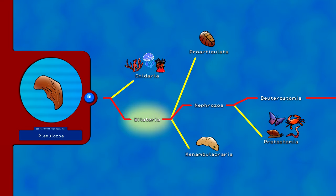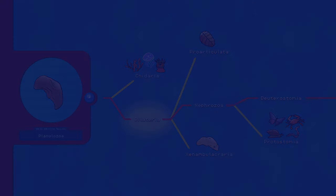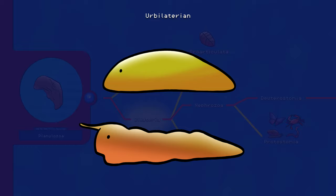Bilaterians also had a coelom, a body cavity containing a digestive tract and other organs. Most early Bilaterians had a gut that ran all the way through the body, but others had a bag-gut with only one opening, meaning waste came out the same hole food went in. We call the first Bilaterian Urbilaterian — it had a mouth and simple eyes near the front of its body. It may have possessed a brain and central nervous system, a segmented body, and additional sensory appendages, or it may have had a blobby non-segmented body and lacked a central nervous system.